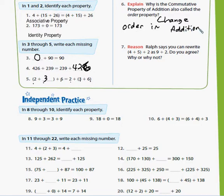Question number seven. Ralph says you can rewrite four plus five plus two as nine plus two. Do you agree? Why or why not? And you can because four plus five is nine. So you're just adding the four plus five together. So four plus five plus two is going to be the same thing as nine plus two. It's the same.